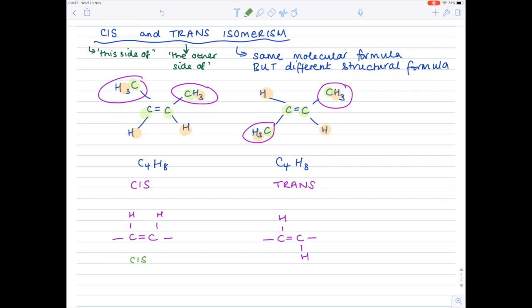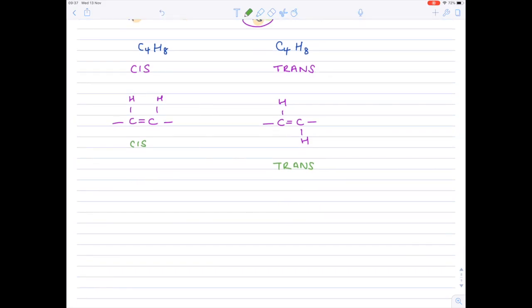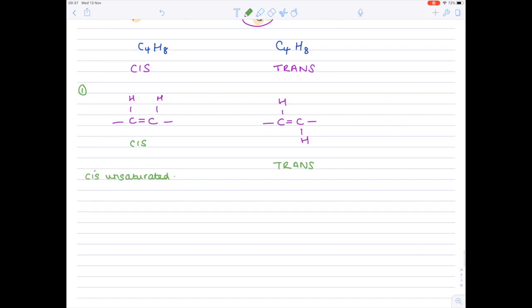And according to our definition of trans, the functional groups, the hydrogen bonds, must be on opposite sides to each other. So this is therefore a trans isomer. And now we'll write their definitions underneath. So this first diagram is cis-unsaturated. We can say here that the hydrogen atoms are bonded to carbon atoms on the same side of the double bond.